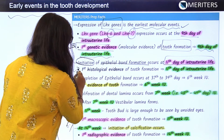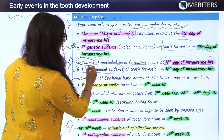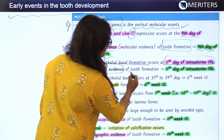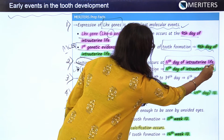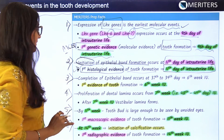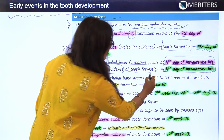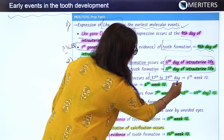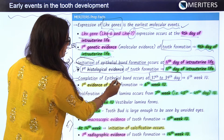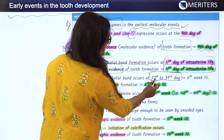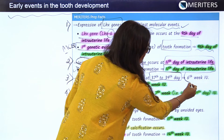The first histological evidence of tooth formation occurs at the 11th day of intrauterine life, which coincides with the initiation of epithelial band formation. Completion of the epithelial band occurs at the 37th to 39th day, which in terms of weeks is the 6th week intrauterine.